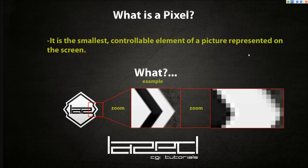So what is a pixel? It's the smallest controllable element of a picture represented on the screen. I've got an example right here for you guys, so hopefully it will be easier to understand this way.